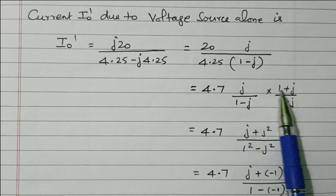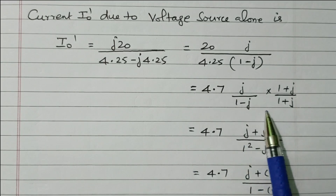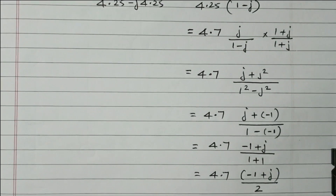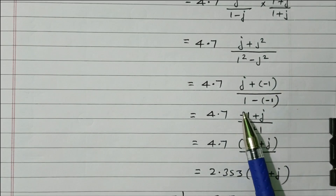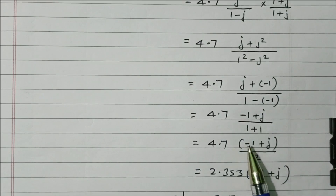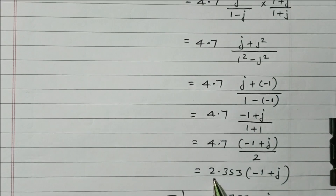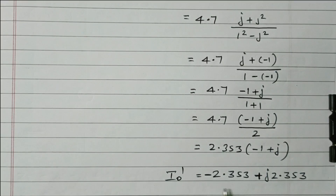20 divided by 4.25 equals 4.7. Multiplying: j(1 + j) = j + j² = j − 1. The denominator (1 − j)(1 + j) = 1 − j² = 2. So 4.7 times (−1 + j) divided by 2 gives 2.353 times (−1 + j). Therefore I₀ dash equals minus 2.353 plus j2.353 amperes. This is the current due to the voltage source alone.